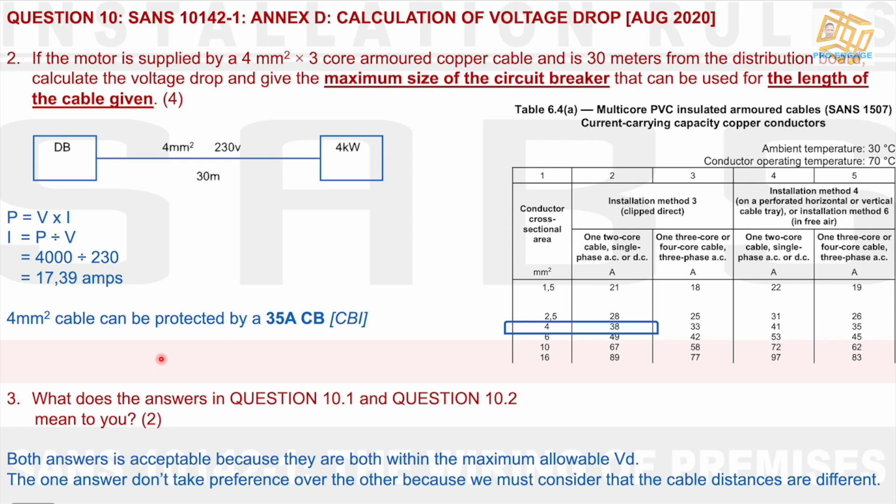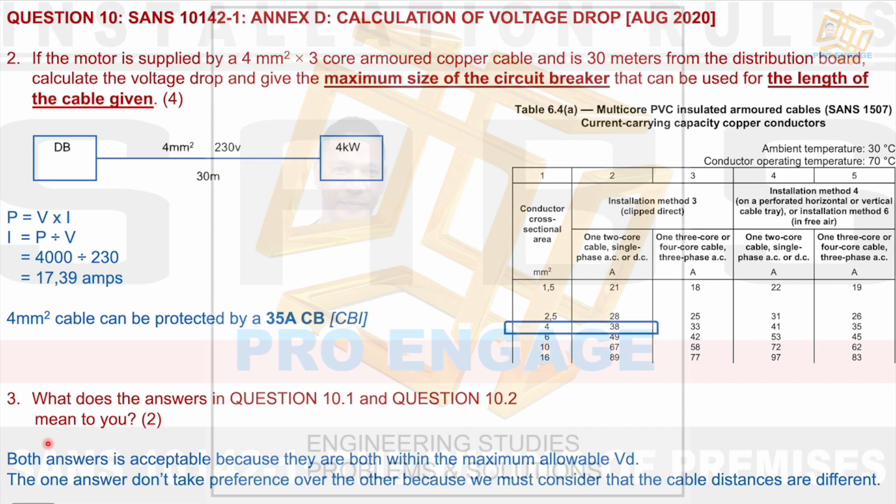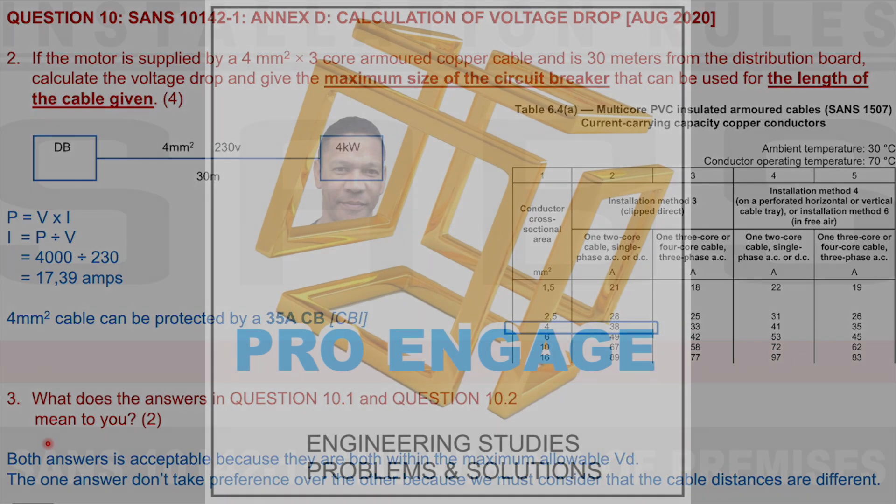Question 3 asks, what does the answers in question 10.1 and 10.2 mean to you? I say here, both answers are acceptable because they are both within the maximum allowable voltage drop. The one answer doesn't take preference over the other because we must consider that the cable distances are different. So both answers are relevant because of cable size and distance. Thank you. We look to the next question.